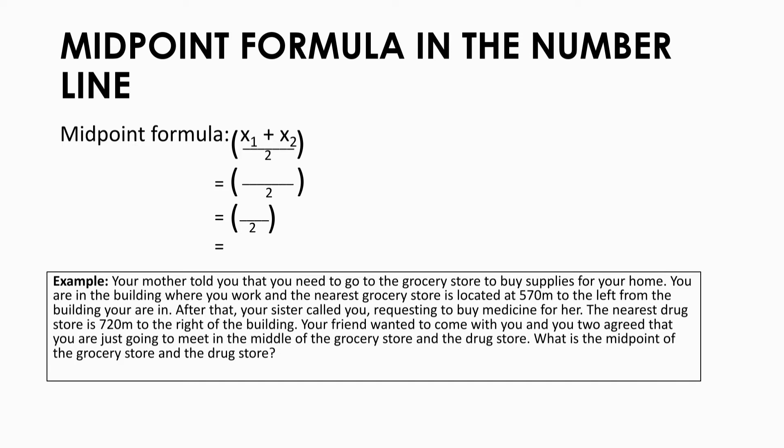This one is very simple. You need to go to the grocery store located 570 meters to the left from the building, so it can be expressed as negative 570. And the drugstore is located 720 meters to the right from the building, so it will be expressed as 720. So, x sub 1 is negative 570, and x sub 2 is 720. Since it's addition, terms with unlike signs will be subtracted. So, negative 570 minus 720 is 150 — not negative 150 because 720 is the higher number, so we keep the sign. 150 divided by 2 is 75, and 75 is the midpoint.